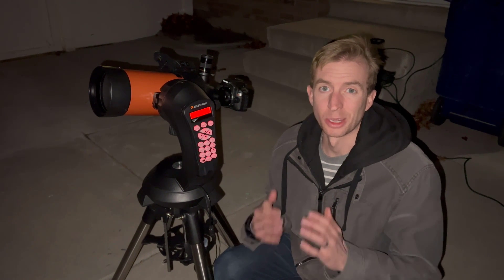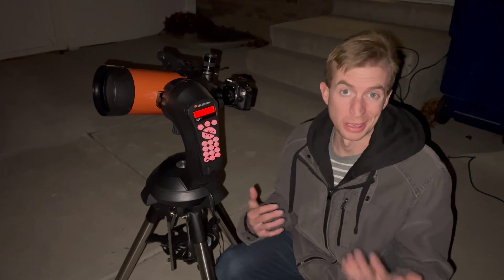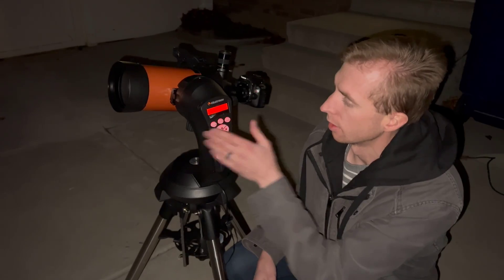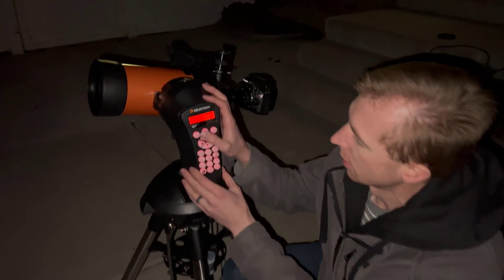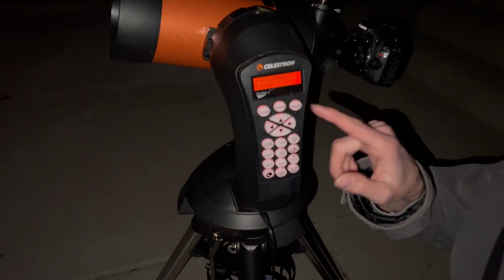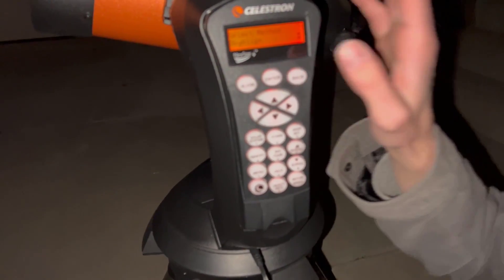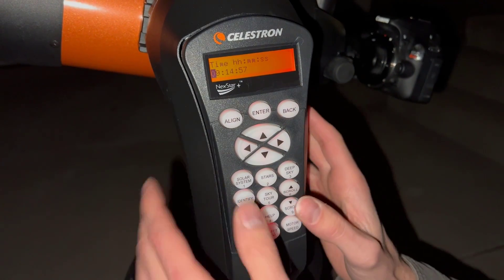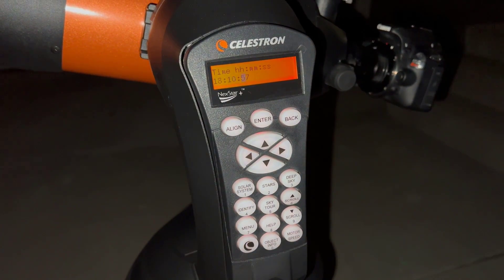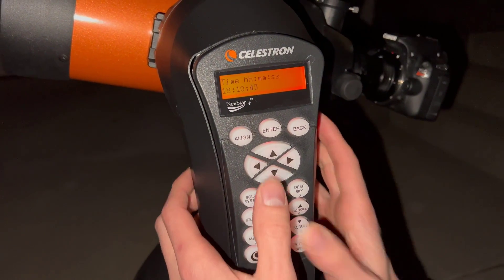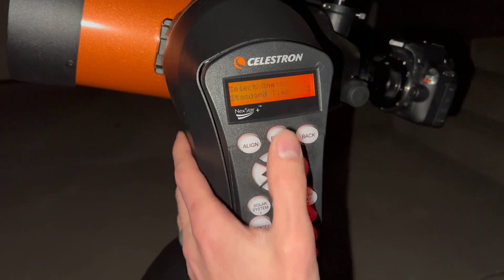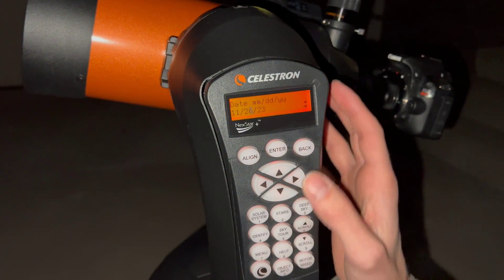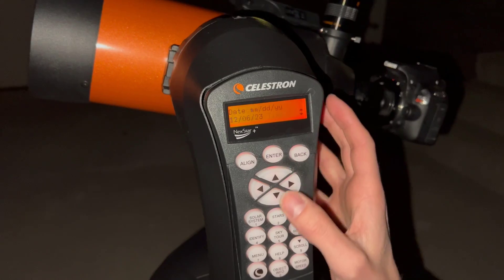So I'm going to show you how to do a quick SkyAlign, and just show you how easy this is. So first things first, you're going to turn your telescope on, and it will load up, and you're going to press enter on your hand controller here, and select the method as SkyAlign. Okay, and the time is 18:10 and 45 seconds. It's standard time. Today is the ninth.